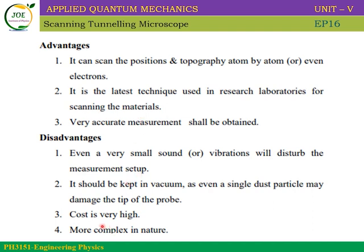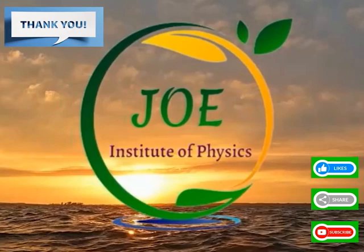Disadvantages: The main disadvantage is that it is very costly. It is more complex in nature. Sensitivity is very high — even a small vibration of the table or external sound can disturb the minute fluctuation measurements. That is why the instrument is maintained in a vacuum. The probe tip is also fragile and costly, and tip damage is a concern. This completes the scanning tunneling microscope theoretical overview — point by point.